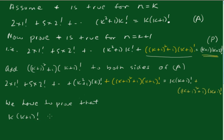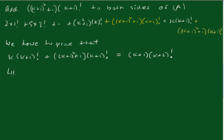So we have to prove that k·(k+1)! + ((k+1)²+1)·(k+1)! equals (k+1)·(k+2)!. Left hand side equals k·(k+1)! plus (k+1)²+1 times (k+1)!.